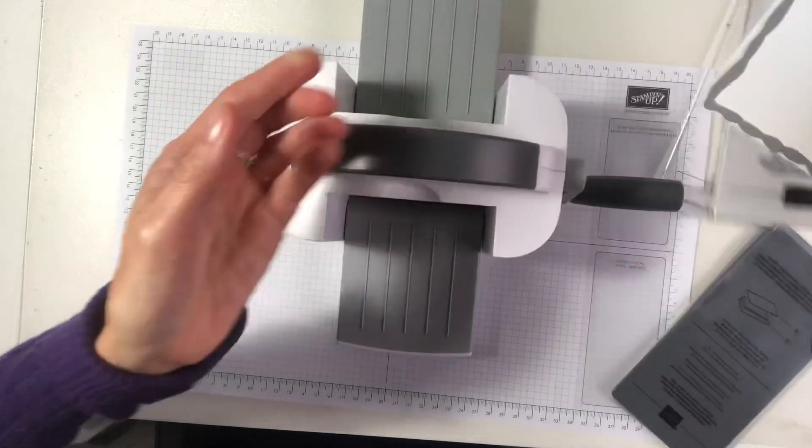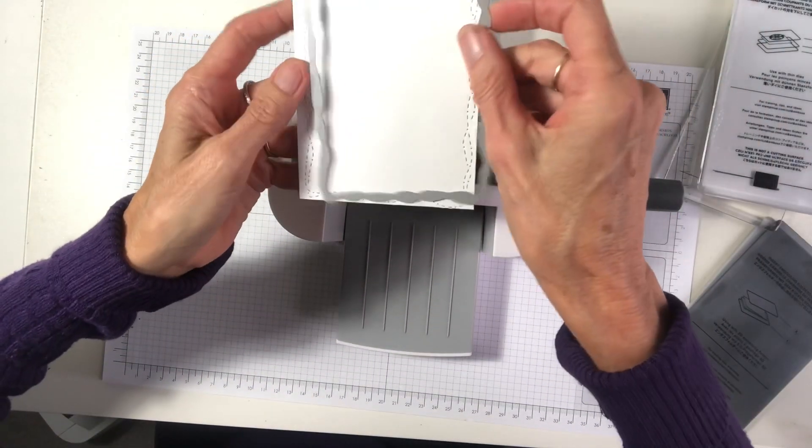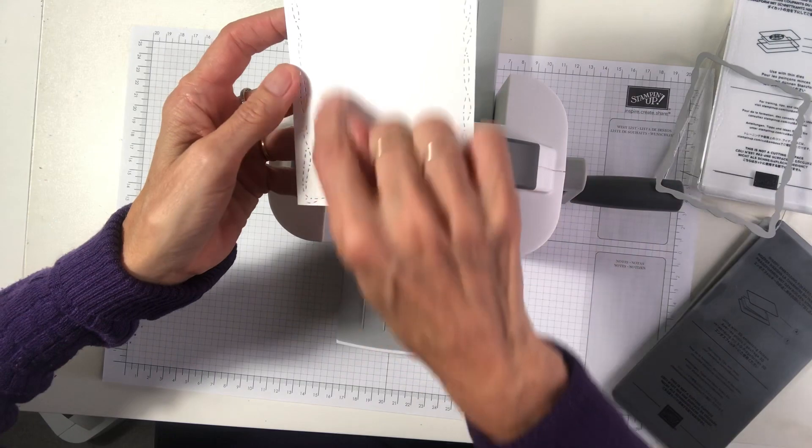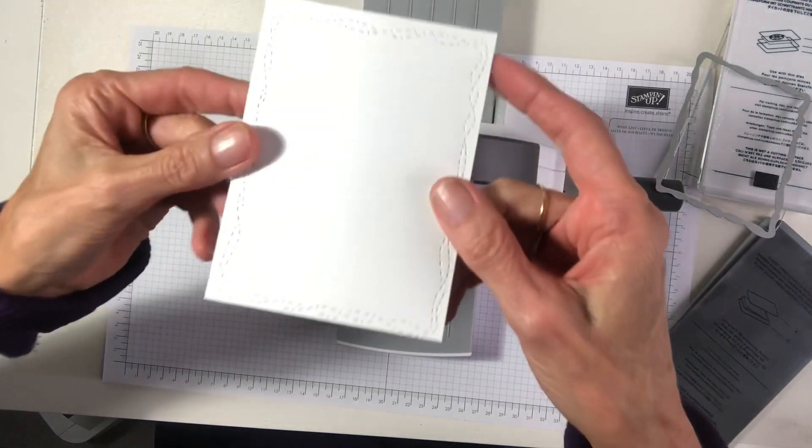Now check out this whimsy, curvy whimsy die too while we're at it. How cute. I love those double stitch lines that's around. I hope you can see that.